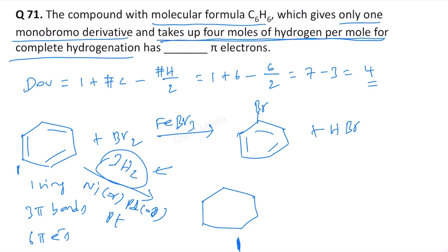This means we need a structure of C6H6 with 4 pi bonds, which could be either 2 carbon-carbon triple bonds or 4 carbon-carbon double bonds. With 4 pi bonds, that means 8 pi electrons, and complete hydrogenation would require 4 moles of hydrogen per mole.